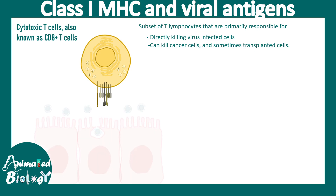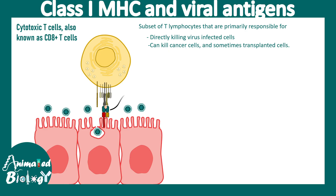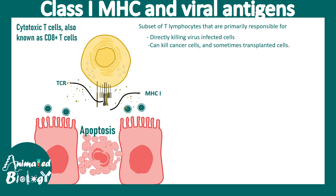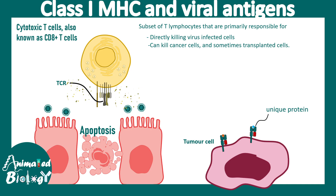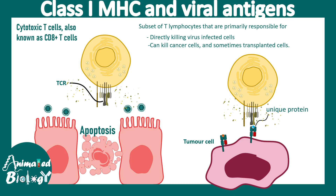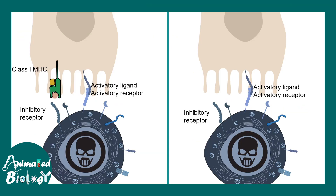When viral peptides are presented, the class 1 MHC and TCR interaction triggers the release of cytotoxic material from the CD8-positive T cell, leading to apoptosis of the virus-infected cell. Similarly, in the case of tumor cells, many antigens and proteins specific to that tumor cell are displayed on the class 1 MHC molecule. These can be recognized by CD8-positive T cells, which can mount an immune response against the tumor cell. This explains why class 1 MHC is critically important in the context of tumor immunity and antiviral immunity.